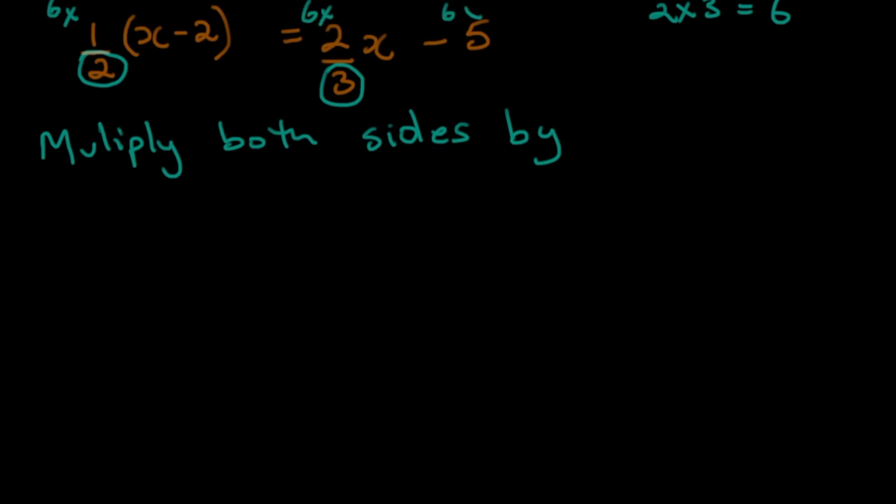I'm gonna do that by 6 and of course I'm also gonna do the 5 by 6. So what is 6 times 1? That's 6. So it's gonna be 6 over 2 and I'll put back the bracket, X minus 2 is equal to 6 times 2, that is 12 over 3. Put back the X, that's gonna be minus 30.